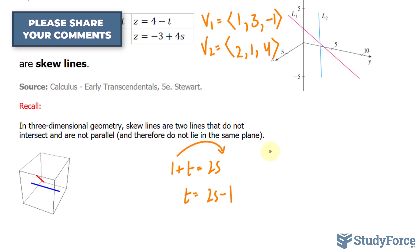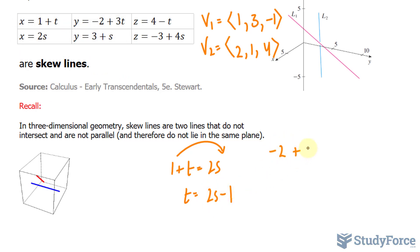Similarly, I'll do the same thing here. I'll substitute this into where I see that t. So, 3 times (2s minus 1) is equal to 3 plus s.